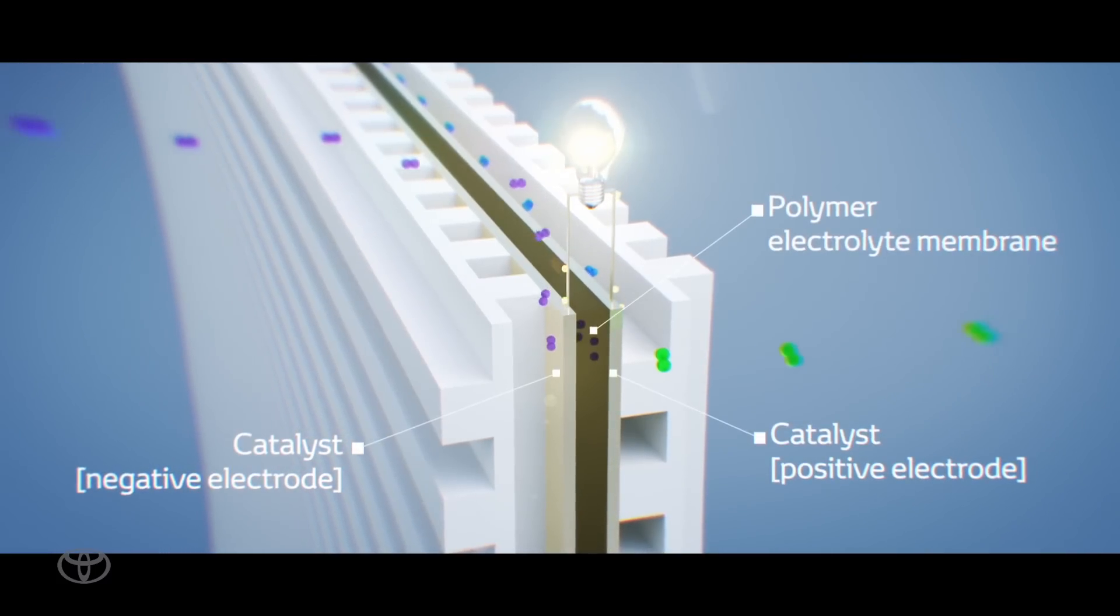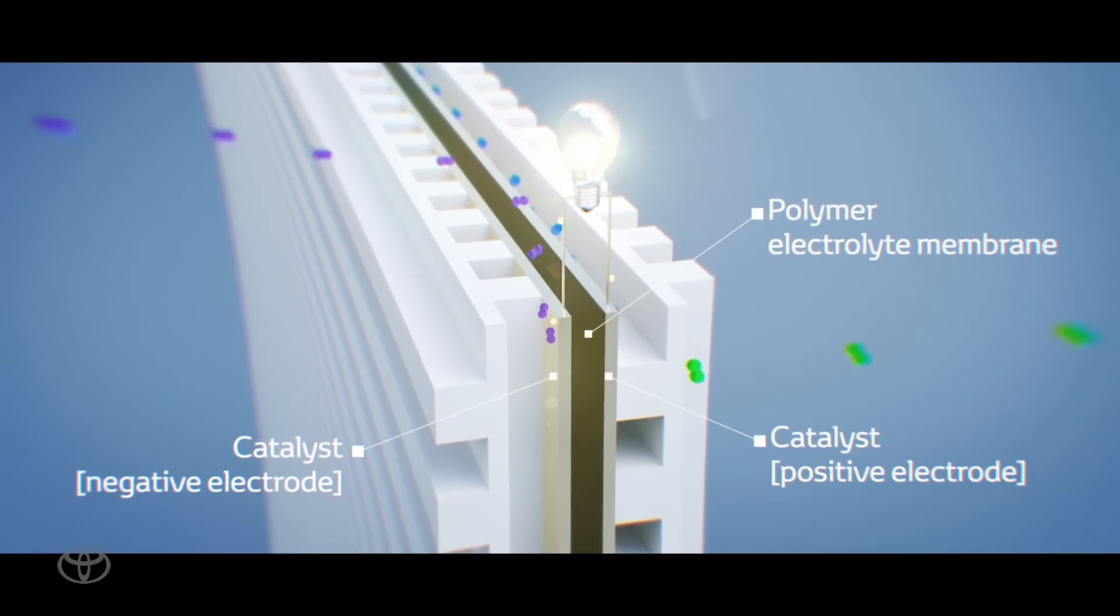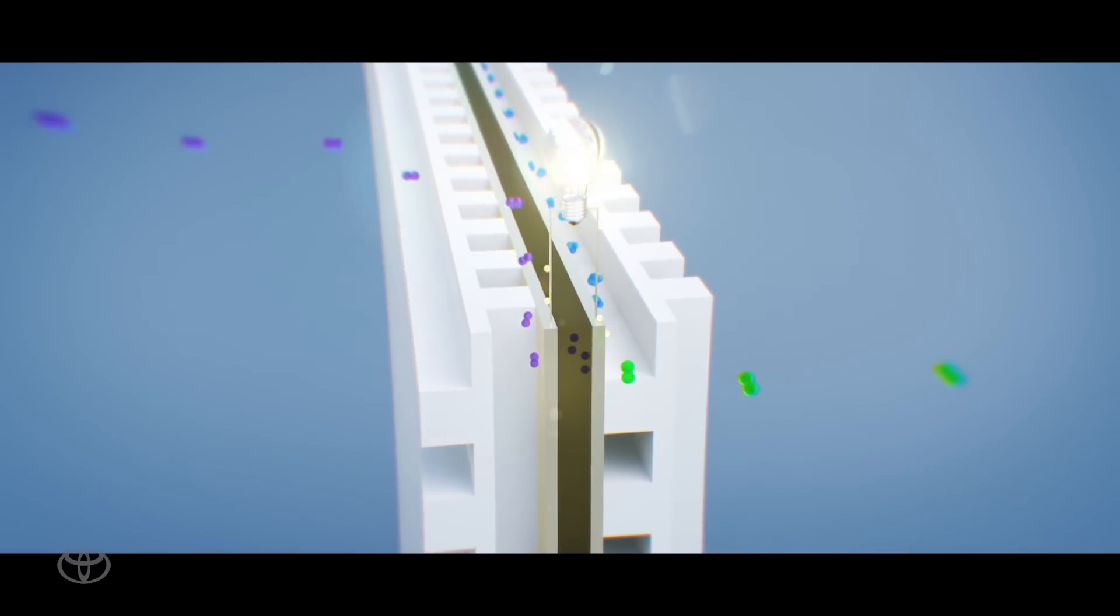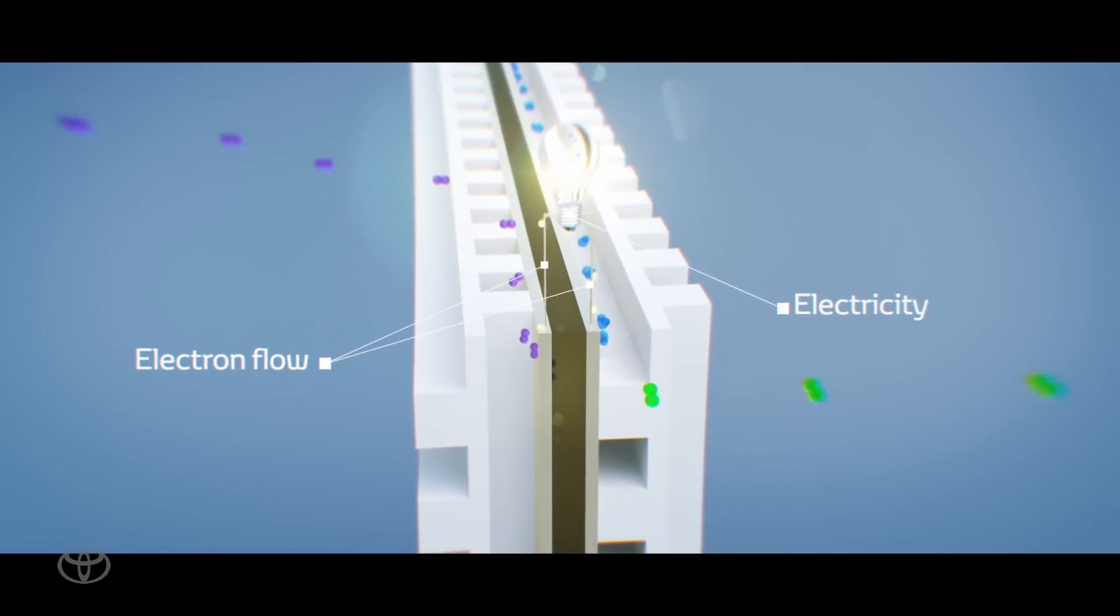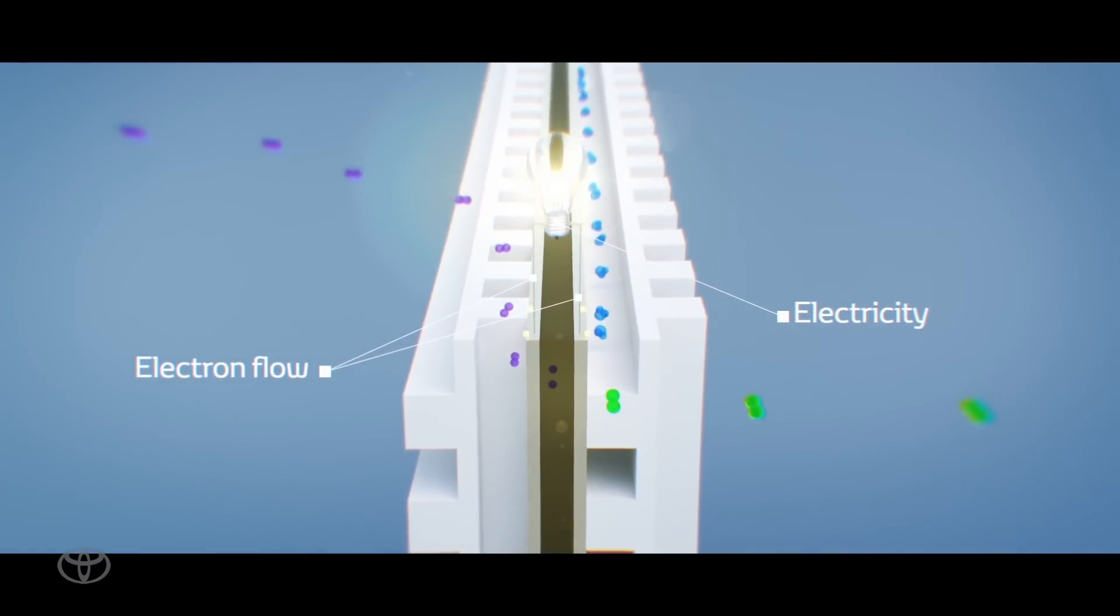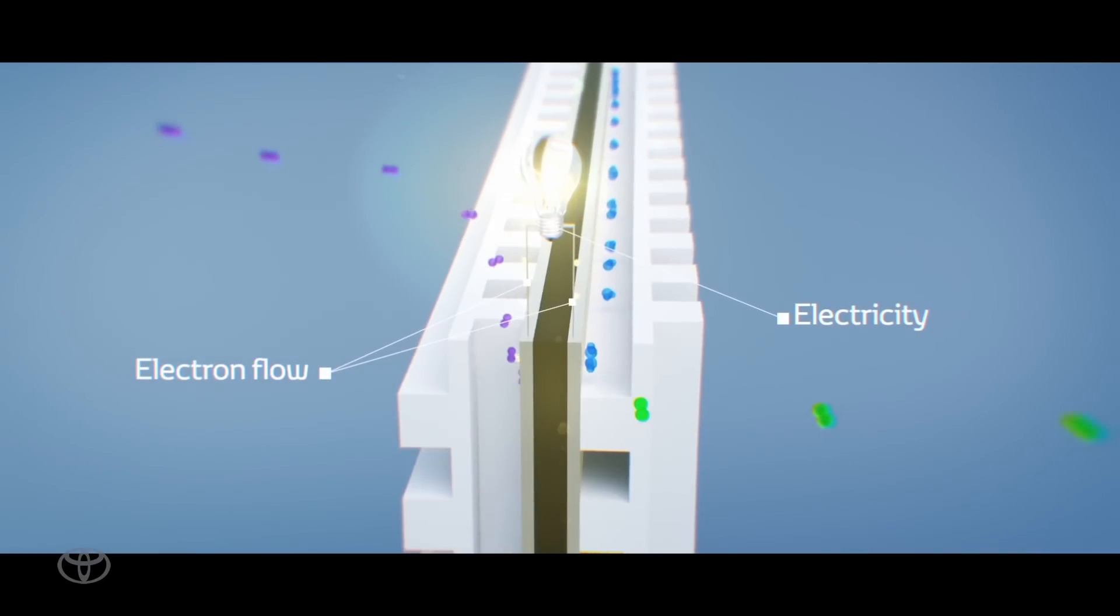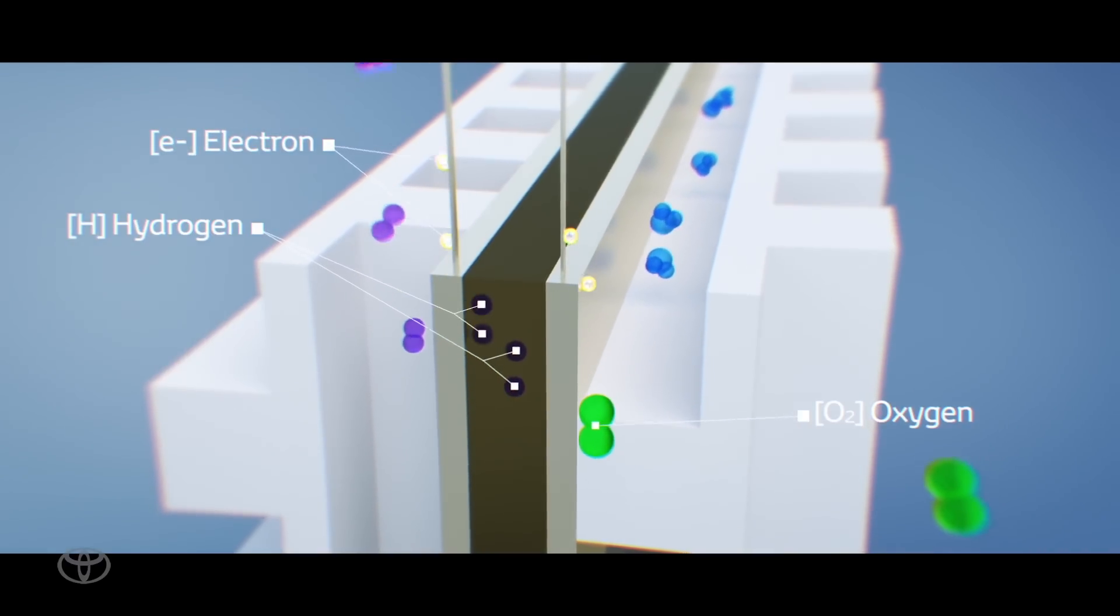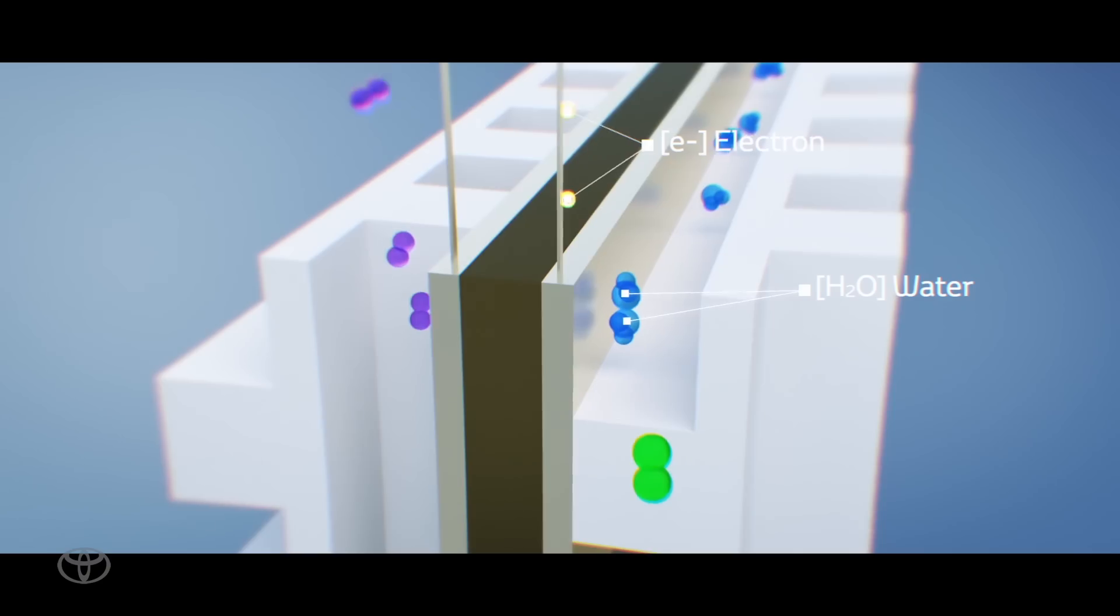Many fuel cells combine to form the fuel cell stack. Hydrogen is supplied to the negative anode and activates, releasing the electron. Then the electron flows to the positive cathode to generate the electricity. After releasing the electron, the hydrogen becomes a hydrogen ion, moving to the positive cathode and bonding with the oxygen in the air, forming water.